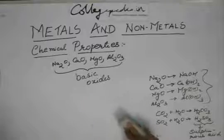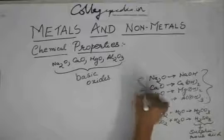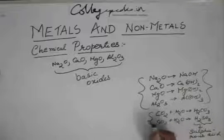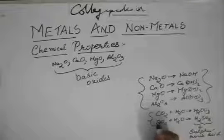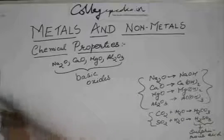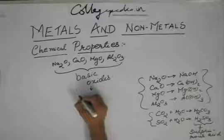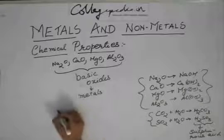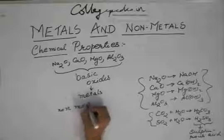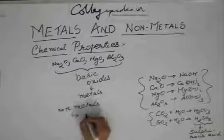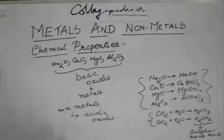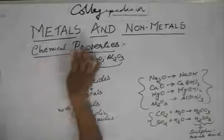We are seeing that in general, these metals Na, Ca, Mg, Al are forming basic oxides and non-metals like carbon and sulphur are forming acidic oxides. So we can say that metals form basic oxides while non-metals form acidic oxides. That is another way of distinguishing metals and non-metals — metals will form basic oxides and non-metals will form acidic oxides.